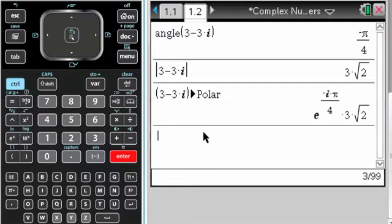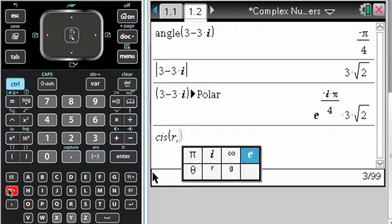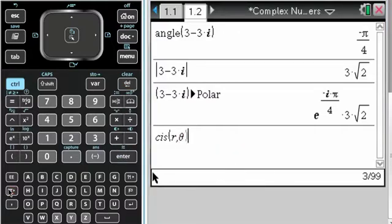Something else - we use cis form quite a bit. So you might find it much easier to just define a new function: cis of r and theta. Theta is hiding down here by pi again. Set that equal to r,